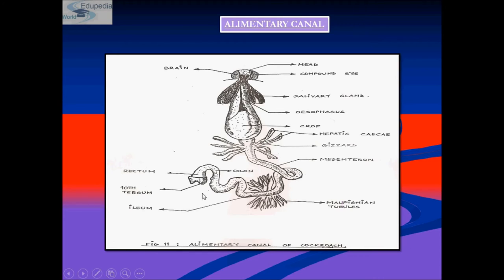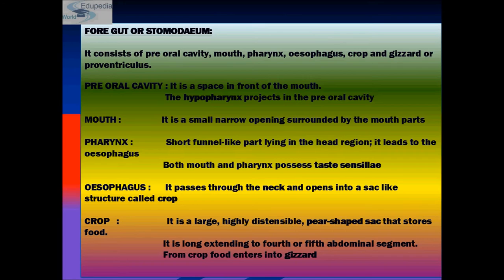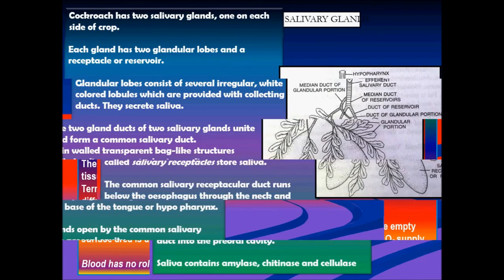Food then enters the hindgut, where Malpighian tubules, ileum, colon, and rectum are present. The undigested food is formed into almost dry pellets and excreted through the anus as feces.